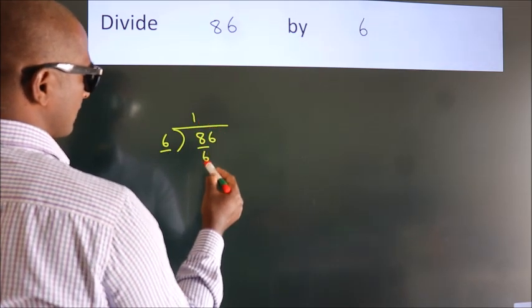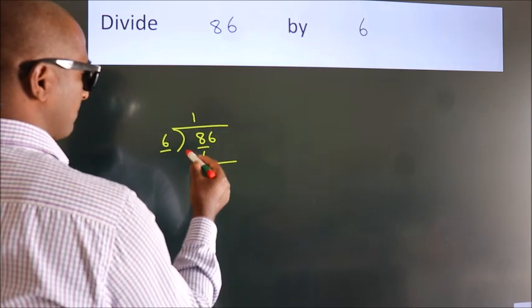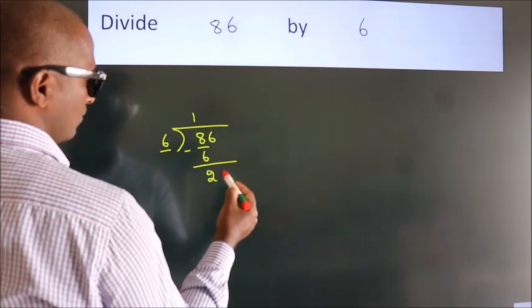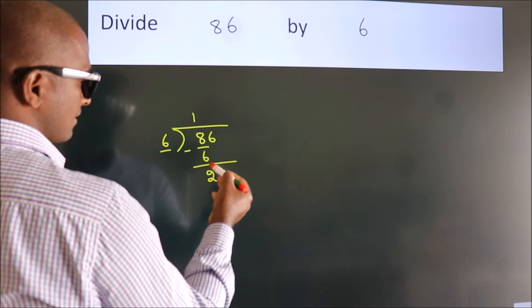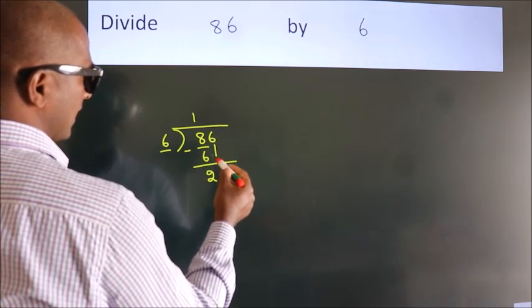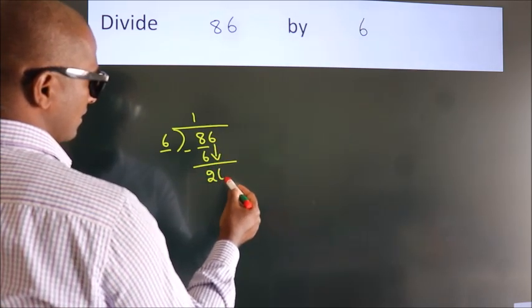1 times 6 is 6. Now we should subtract. We get 2. After this, bring down the beside number, so 6 down.